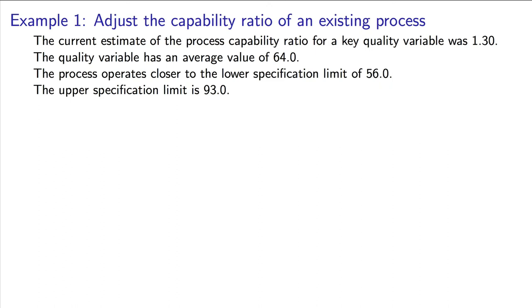Imagine that our current capability ratio for a key quality variable is 1.3. The average value of the quality variable being measured was 64 units, and we are told the process operates closer to the lower specification limit, which is 56. The upper specification limit is 93.